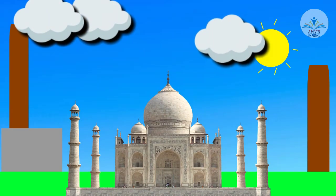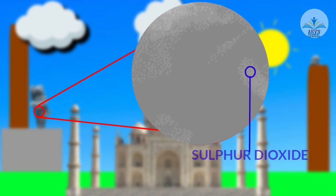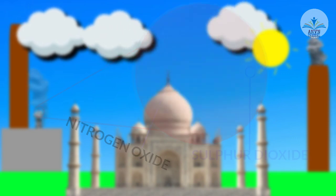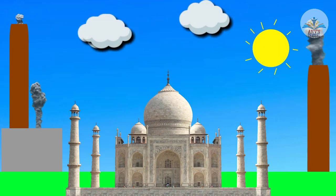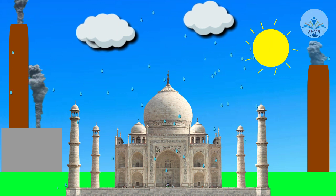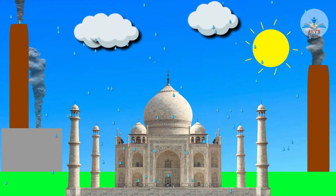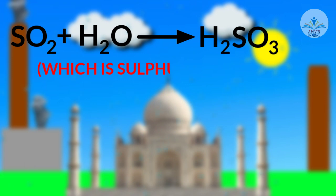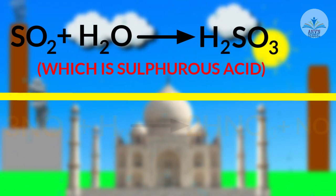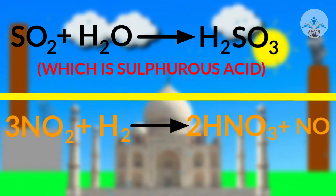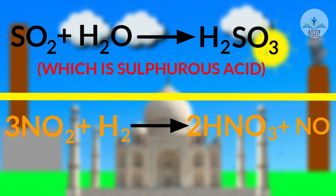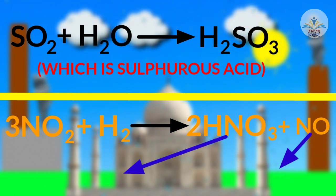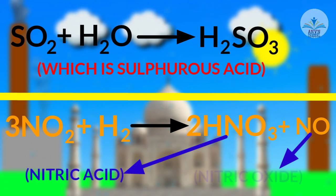When pollutants such as sulfur dioxide and nitrogen oxide combine with water vapor in air, acid is formed. The reaction can be represented as SO2 + H2O gives H2SO3, which is sulfurous acid. 3NO2 + H2O gives 2HNO3 + NO, where 2HNO3 represents nitric acid and NO represents nitric oxide.